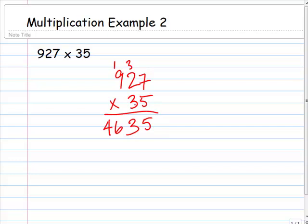And we move to the tens place and we do the same thing. But this time our product for 3 times 927 needs to start in the tens place. So you can put a 0 here. You don't necessarily have to, but you can put a 0 there just to let you know that you're going to start in the tens place.